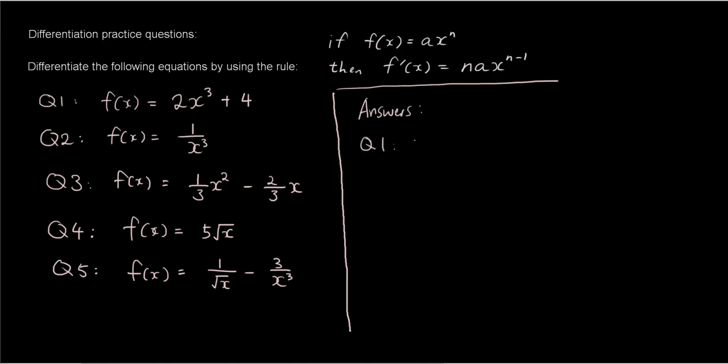Let's do question 1 first. We have f(x) equals 2x cubed plus 4. Now applying the rule to the first part of the equation, 2x cubed, we bring the 3 to the front. So 3 times 2x.